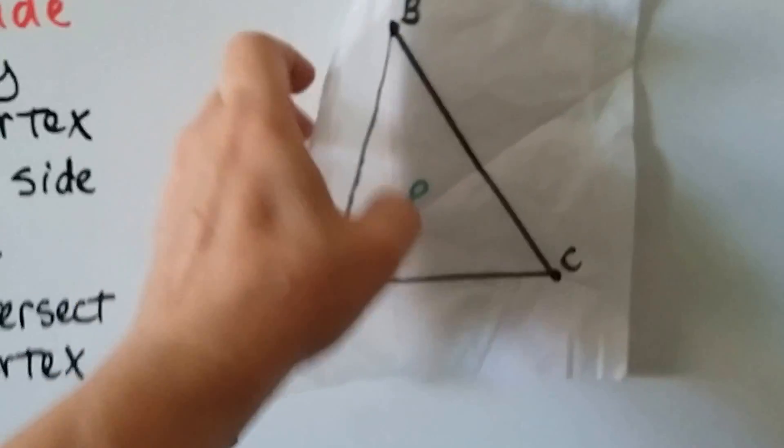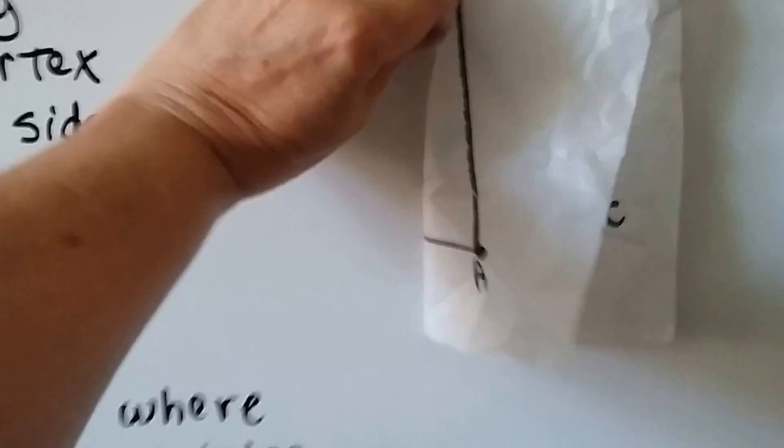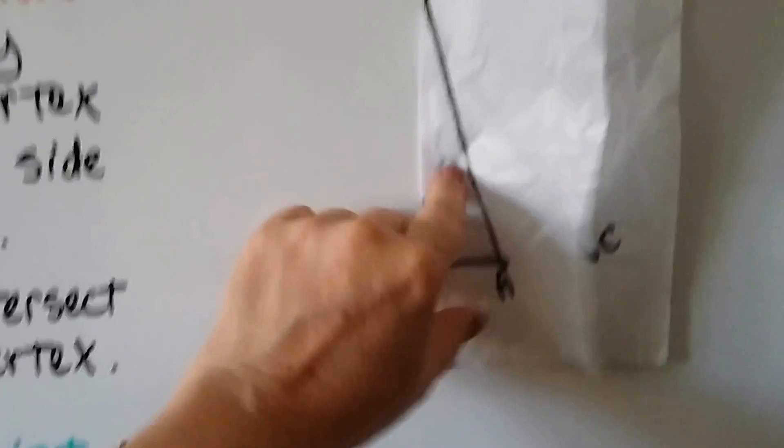And we can do B. We fold it through B so that AC is laying upon itself flat like that. We want AC to be flat upon itself through B.